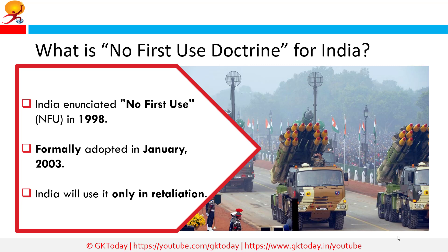After the 1998 nuclear tests, India enunciated a doctrine of No First Use of nuclear weapons, formally adopted in January 2003. This doctrine states that nuclear weapons will only be used in retaliation against a nuclear attack on Indian territory or on Indian forces anywhere — India will not preemptively use nuclear weapons. Since adopting the doctrine, India has consistently maintained that its nuclear weapons are based on staggering and punitive retaliation in case deterrence has failed. Pakistan, by contrast, has openly threatened India with the use of nuclear weapons on multiple occasions, beginning from the time neither nation was even an acknowledged nuclear power.